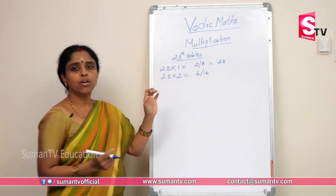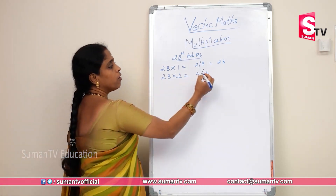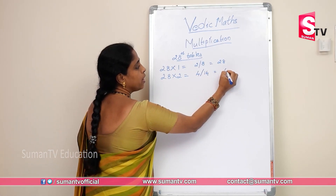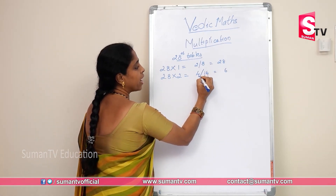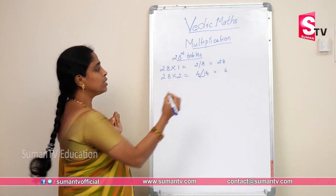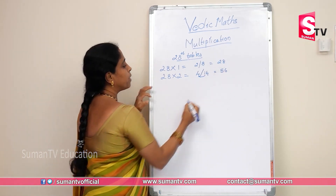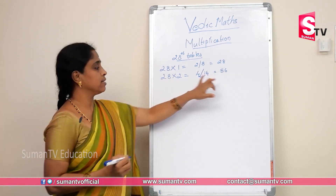We will test the Vedic method. The end number is 6. We must add to 4: 1 plus 4 is 5. So 28 into 2 is 56.